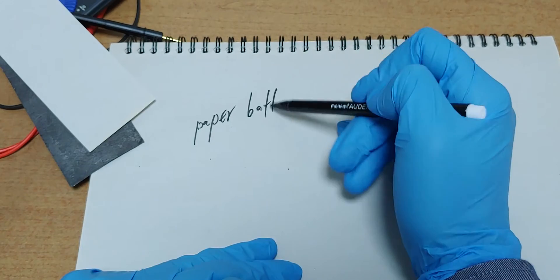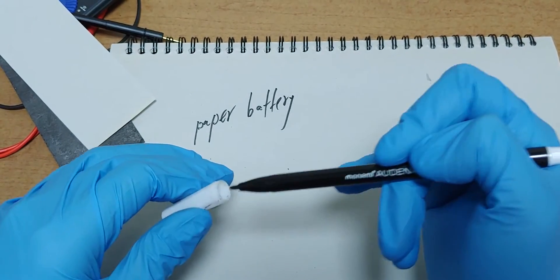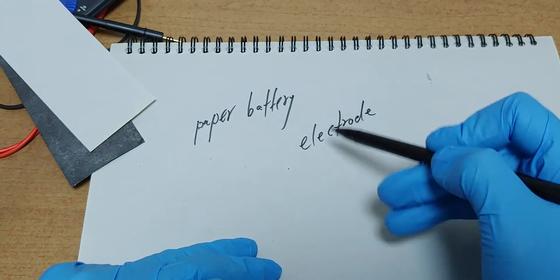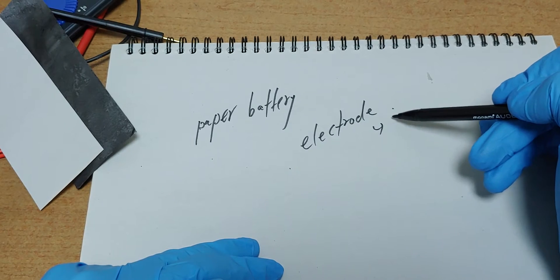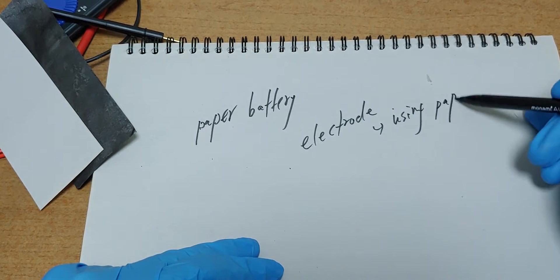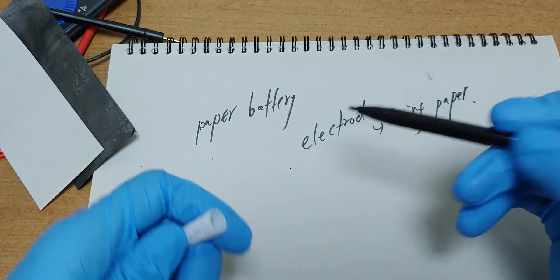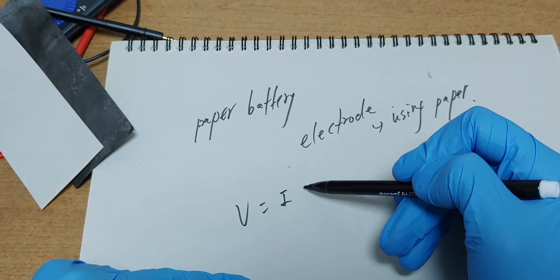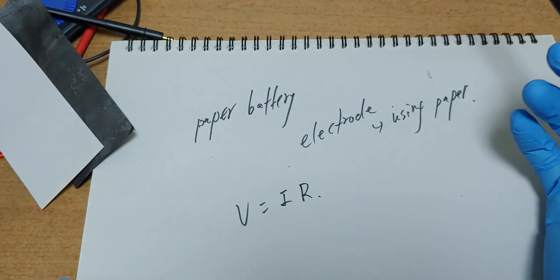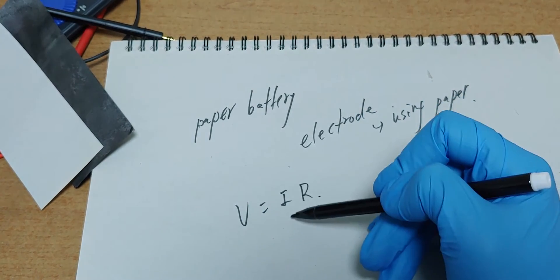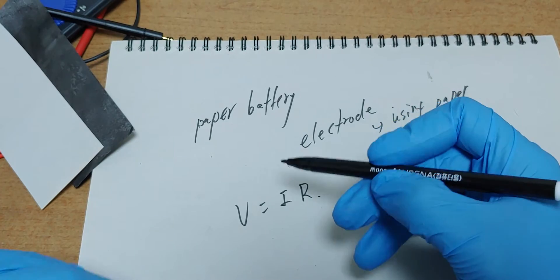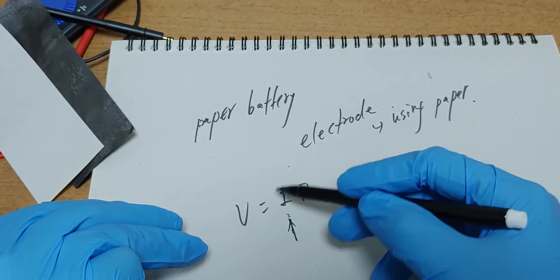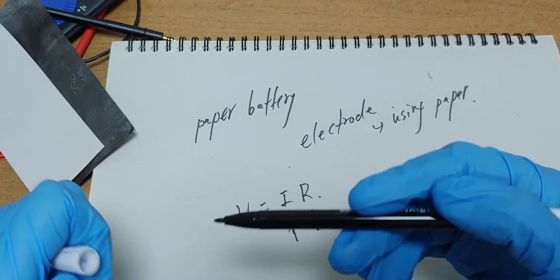Paper battery electrode, by using paper. V equals I multiplied by R. The most important thing is to increase the intensity ampere and reduce the resistance.